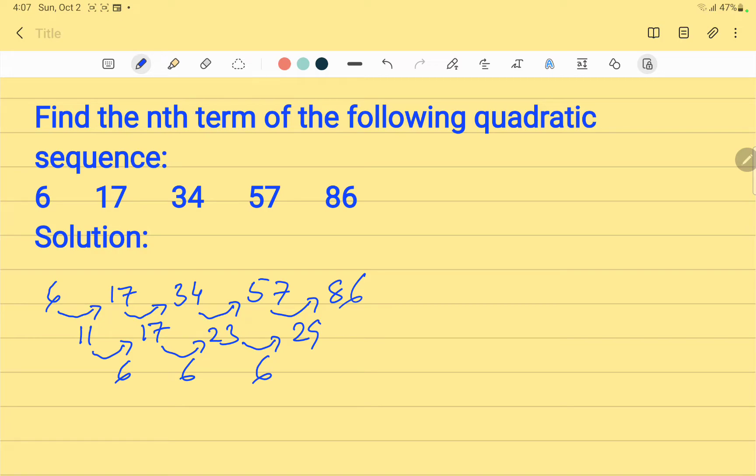The differences in the next step are the same, that is 6. Since we got these at the second step, we divide it by 2 and write it with n squared. When we divide 6 by 2, we get 3, and we attach n squared to it, giving us 3n².